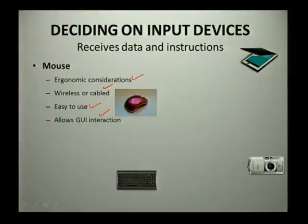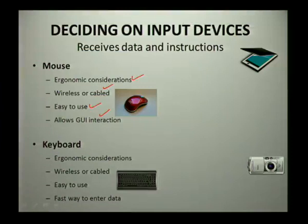GUI interaction means they allow you to interact with your interface — clicking, double clicking, and scrolling. The second device is the keyboard. Keyboards also allow economic considerations; you can have the option of choosing a wireless or cabled keyboard.